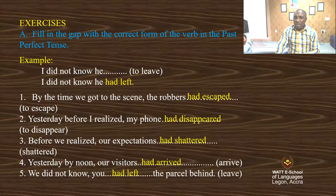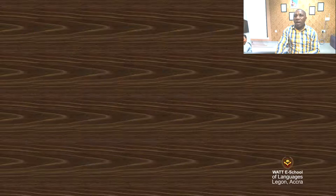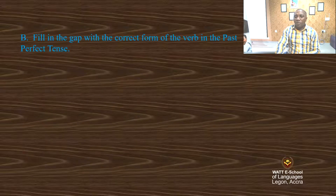You can see that we have 'had' plus the past participle of the verb. Activity B: Fill in the gap with the correct form of the verb in the past perfect tense.